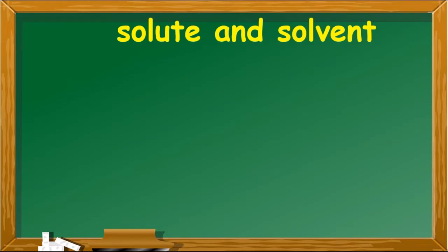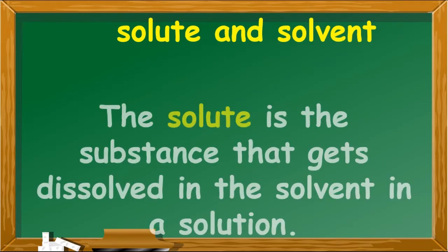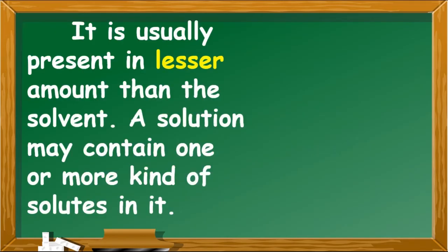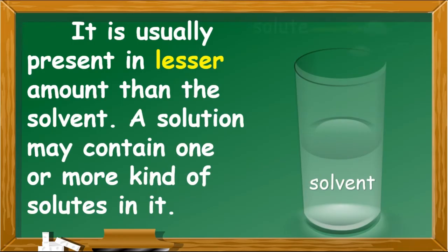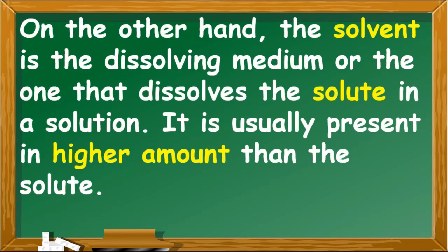Solutions are generally composed of solute and solvent. The solute is the substance that gets dissolved in the solvent. In a solution, it is usually present in lesser amount than the solvent. A solution may contain one or more kinds of solutes in it. On the other hand, the solvent is the dissolving medium or the one that dissolves the solute in a solution. It is usually present in higher amount than the solute.